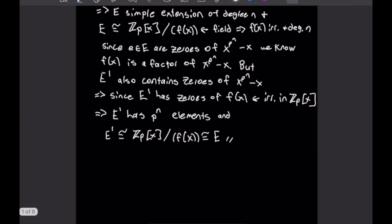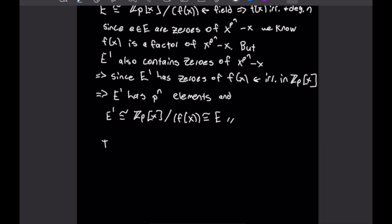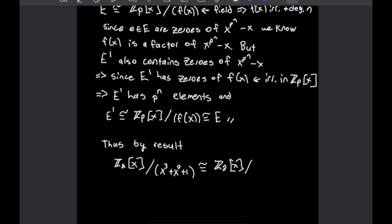That is isomorphic to E from the earlier statement. Looking at the extreme left and right-hand sides, that finishes this result. We've proved that two fields both of the order of some power of a prime must be isomorphic. Since the two fields in our example are both of order 8, which is 2³, the two fields must be isomorphic. That completes this example.